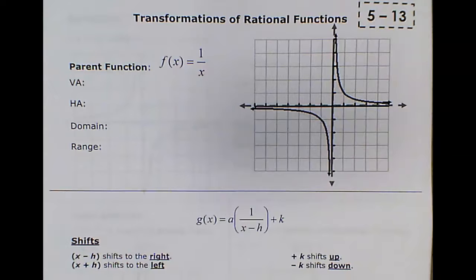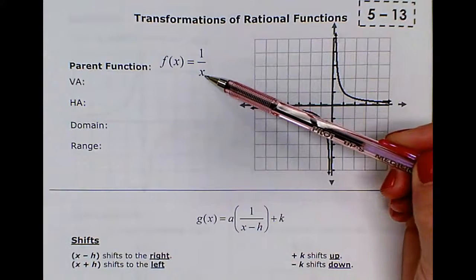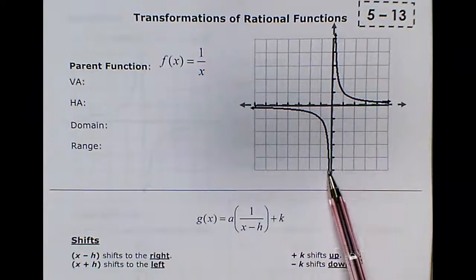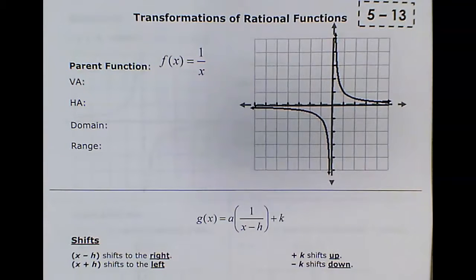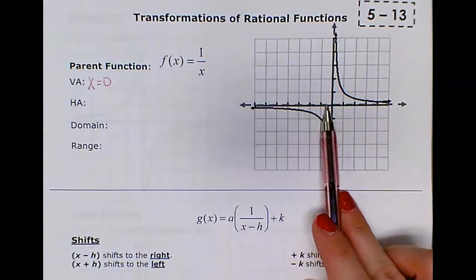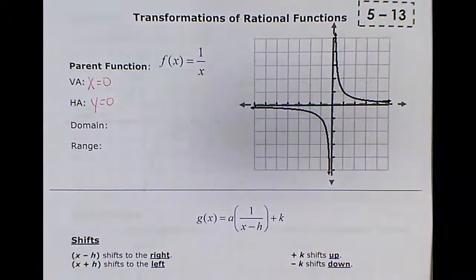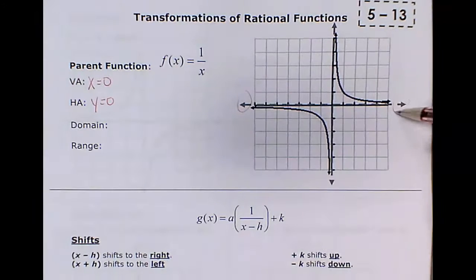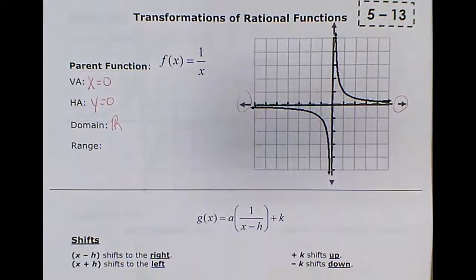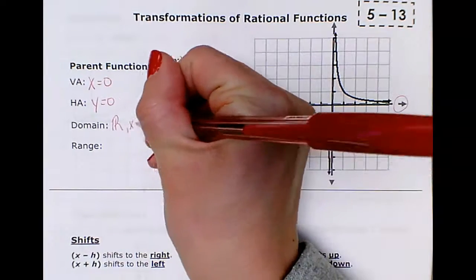The rational parent function is a hyperbola. The equation is f(x) = 1/x, so x is in the denominator. The vertical asymptote is going through an x value of 0, so x = 0. The horizontal asymptote is going through a y value of 0, so y = 0. For the domain, we go from negative infinity to infinity — all real numbers — except x cannot be 0 because there's a vertical asymptote there.